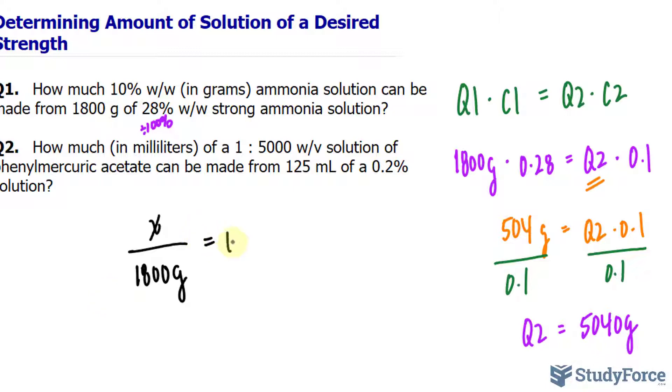And together that makes 0.28. This is where this weight per weight expression comes. That is, a known weight of active ingredient was combined with a known weight of non-active ingredient together making 1,800 grams.